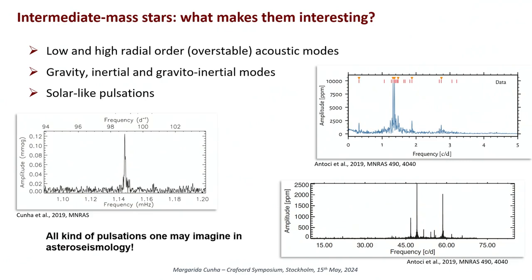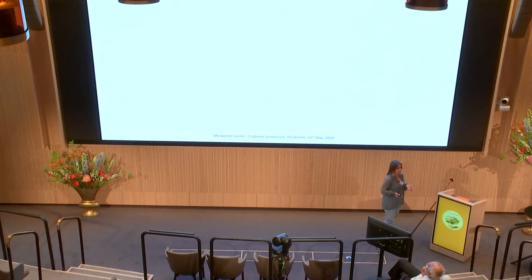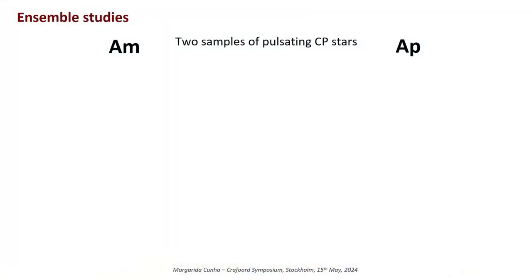One of the things that we can do these days, thanks to the amounts of data that we're getting from space, is to do ensemble studies. Let me take you through one possible ensemble study in this region of the HR diagram. Let's consider two classes of A-type stars: the AM and the AP stars, which I'll go through in a minute.